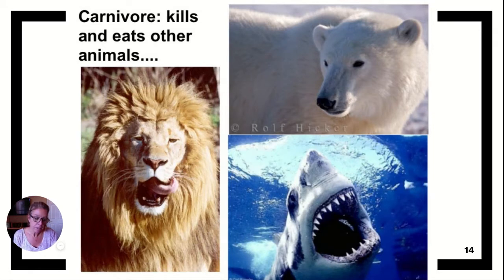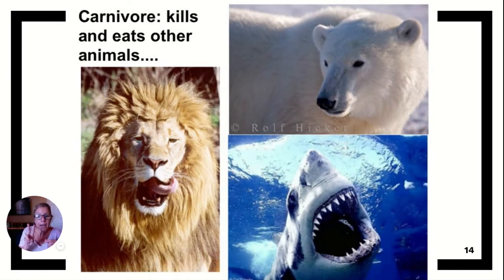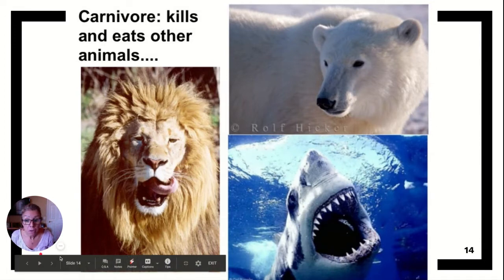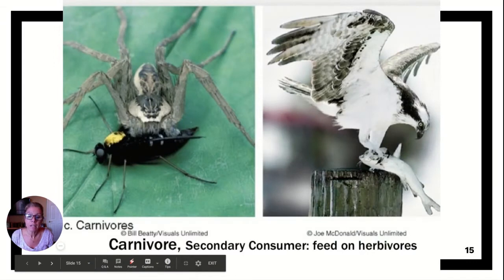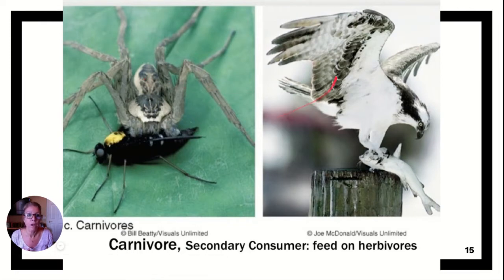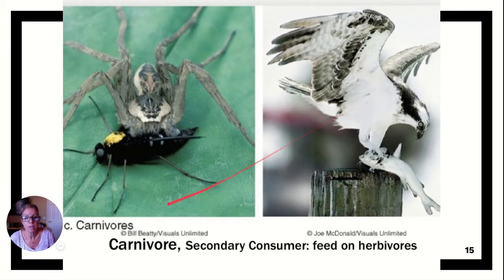Carnivores are secondary consumers that eat animals. A primary consumer eats plants. A secondary consumer eats herbivores. A tertiary consumer eats other carnivores. For example, this spider is eating an herbivore, and this bird is eating a fish. The fish eats algae — so the algae was the producer, the fish is the primary consumer, and the bird is the secondary consumer.